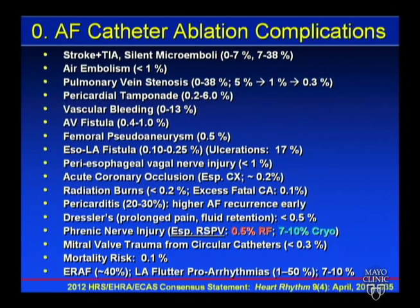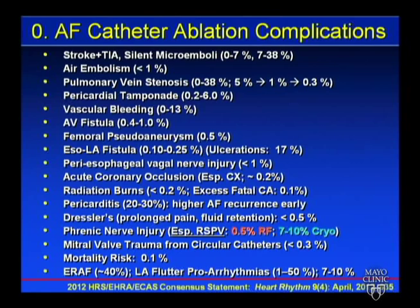Pericardial tamponade occurs in 0.2% to 6% depending on the series. These are generally during the procedure — the patient presents with hypotension, vagal episodes, Kussmaul's breathing. With ultrasound you'll often see the effusion developing before hemodynamic compromise. Late tamponade also occurs — maybe 10–15% of cases after AF ablation — mostly in the first 24–48 hours but some out to 30 days. Some are late bleeding from undetected holes; others are reactive tamponades from significant pericarditis.